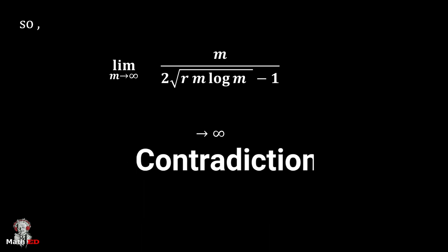So we get that lim(m→∞) m/(2√(r·m·log m) - 1) is also infinity, which proves the contradiction. So yes, we are done.